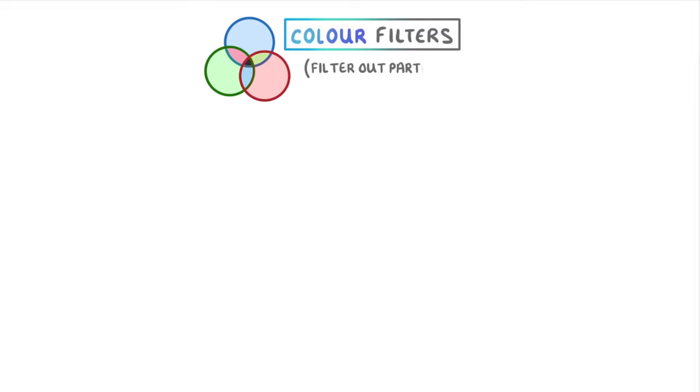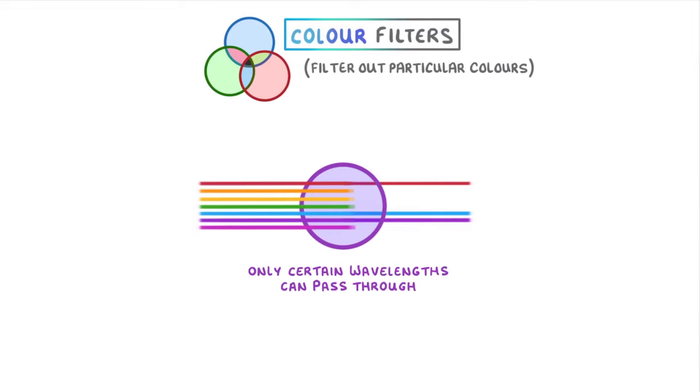The last thing we need to look at are colour filters, which are used to filter out particular colours so that only certain wavelengths can pass through. They work by only transmitting certain wavelengths of light while absorbing the rest.